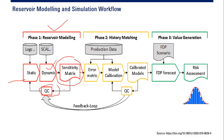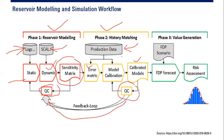We do history matching using production data. In reservoir modeling we use seismic, log data, and core data. In history matching we use production data and we check the error, then do model calibration. After getting the calibrated model we also do quality control — it's a feedback loop. After obtaining the history-matched model, we create value generation: forecast, field depletion plan, and risk assessment.